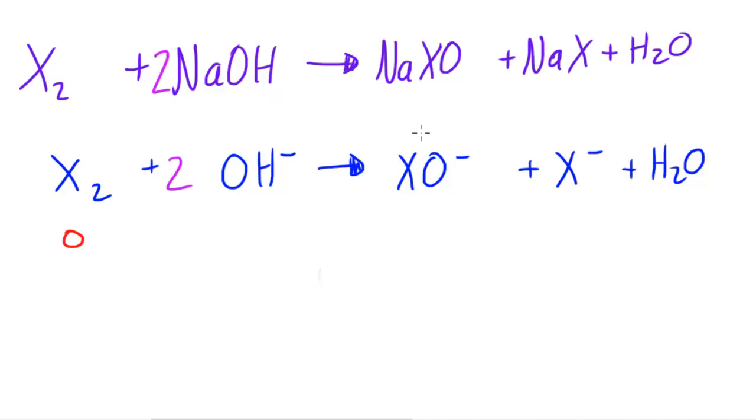And so the X2 when it reacts is going to form XO minus and the oxidation number of oxygen is going to be 2 minus as usual. Whereas the oxidation number of the halogen is going to be, to balance this out, since 2 minus needs to be added to something to make just 1 minus, it needs to be added to 1. So the oxidation number of the X is going to be plus 1. And over here, the oxidation number of the X minus is just the charge on it, so it's going to be minus 1.